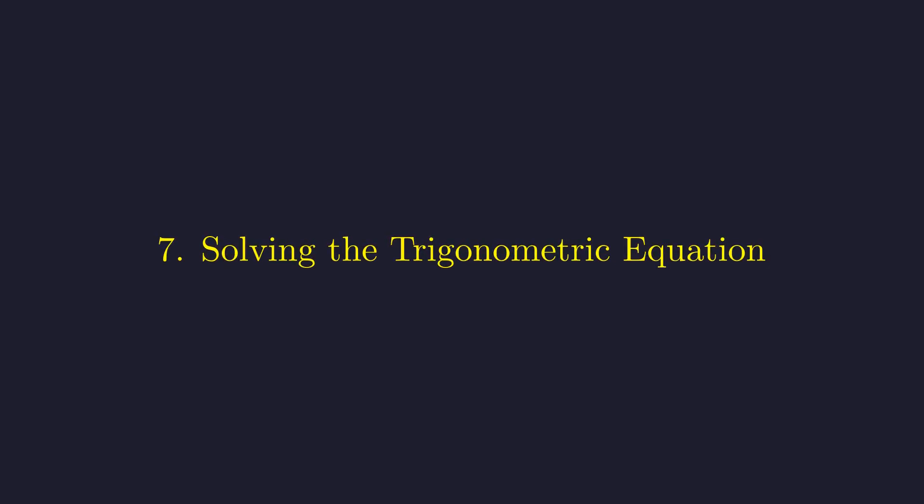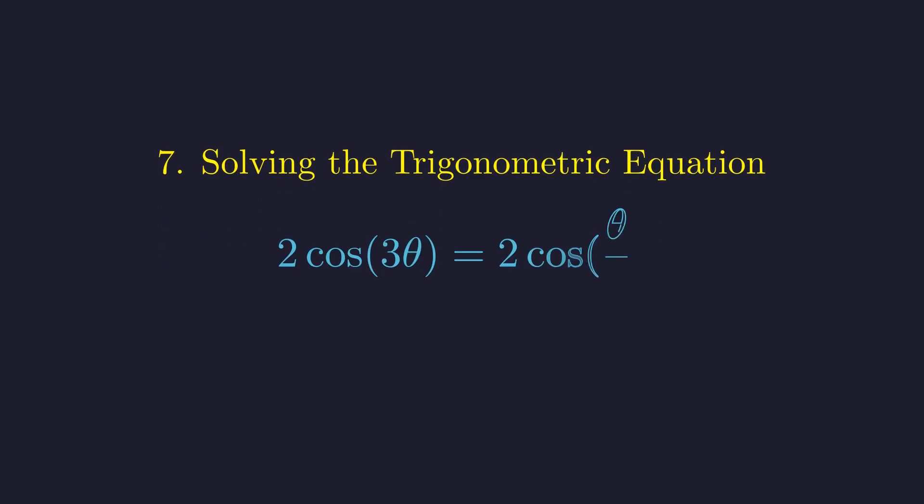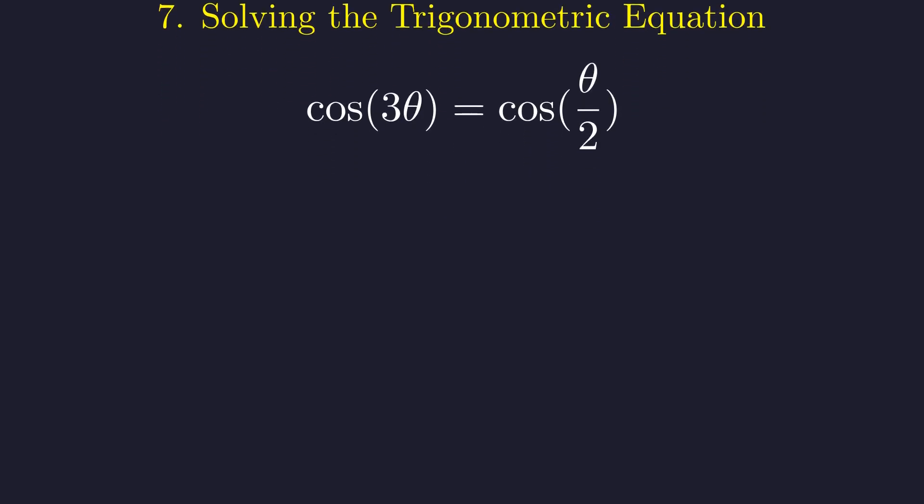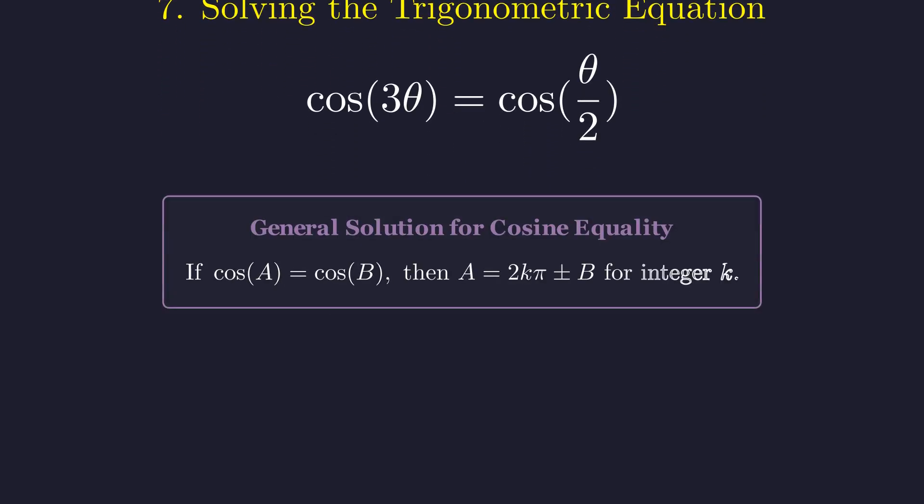Let me put both sides together. 2 cosine of 3 theta equals 2 cosine of theta over 2. Both sides have a factor of 2 that we can cancel. This simplifies to cosine of 3 theta equals cosine of theta over 2. When cosine of a equals cosine of b, we know that a equals 2k pi plus or minus b, where k is any integer. This gives us two families of solutions to consider.